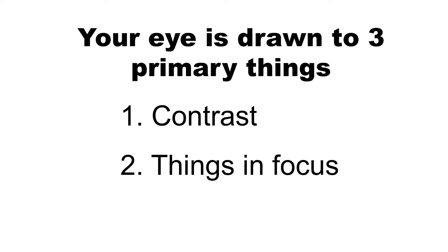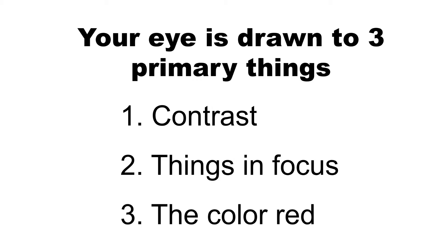The second thing your eye is drawn to is things that are in focus. Obviously we want our subject matter in focus a lot of times, so we need to learn how to control focus within an image — it could be selective focus depending on the story you're trying to tell. The last thing your eye is drawn to — and you probably never think of this — is the color red. That has everything to do with the wavelength of red and how light falls onto the rods and cones in your eyes. A good test: put a red object in your peripheral vision — even looking straight ahead, you'll always spot that red object.